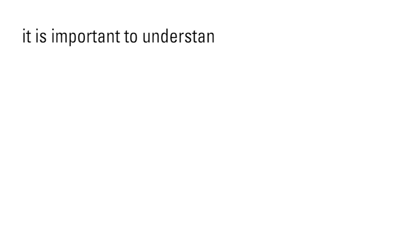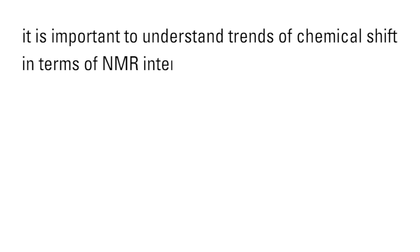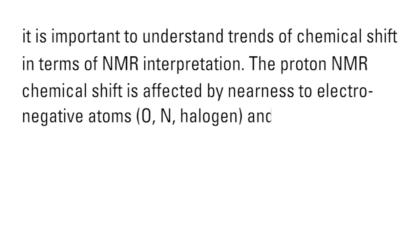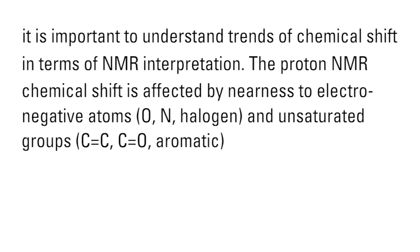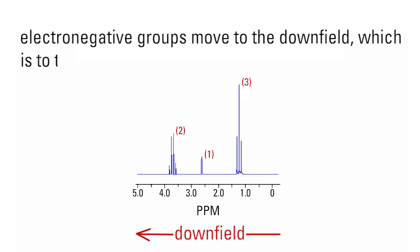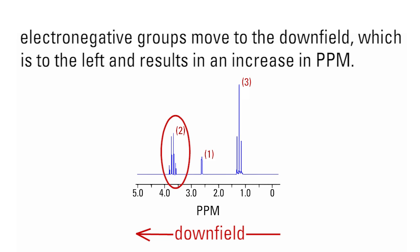It is important to understand trends of chemical shift in terms of NMR interpretation. The proton NMR chemical shift is affected by nearness to electronegative atoms: oxygen, nitrogen, halogen, and unsaturated groups, carbon double bonded to carbon and carbon double bonded to oxygen and aromatic. Electronegative groups move to the downfield, which is to the left, and results in an increase in ppm. In our case, the CH2 group is closer to the oxygen directly attached to it, so its signals are shifted to the left.